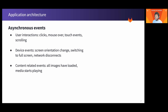One challenge for front-end engineering is that it's usually difficult to predict the exact sequence of interactions a user will have with a web application. Therefore, it's important that applications can respond to events that occur at any point in time. These events can be roughly grouped into user interactions such as clicking, mouse hovering, or touch and scroll events; device events such as changing screen orientation or the network disconnecting; and content-related events such as images loading on the page or media starting to play. Events provide the opportunity for users to signal intent to perform a specific action, or for engineers to present a change of data or state to the user in a meaningful way.